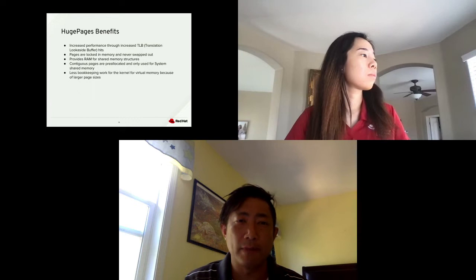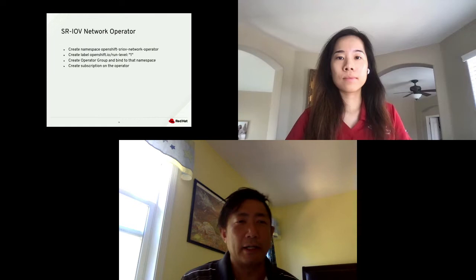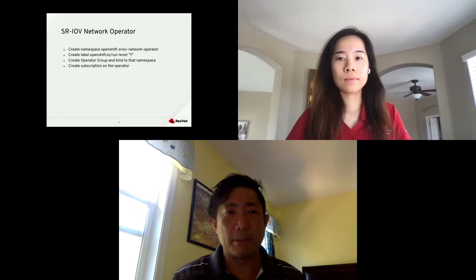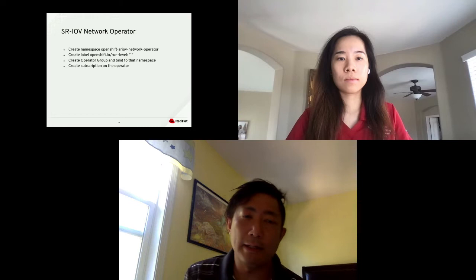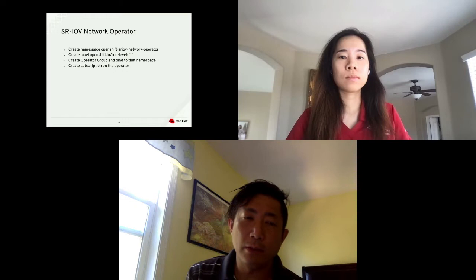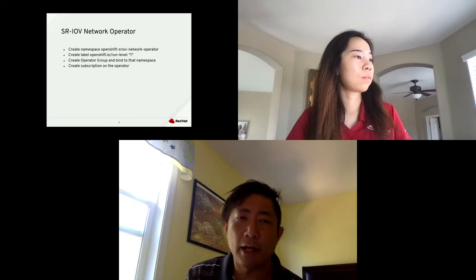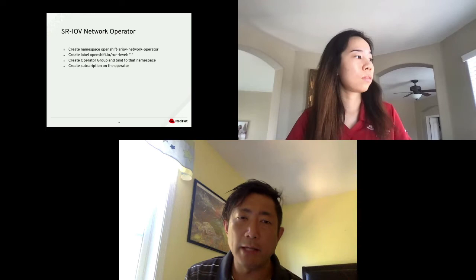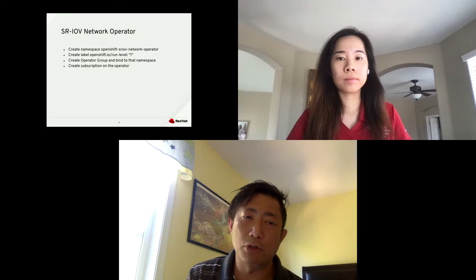Now for the SRIOV network operator, the second prerequisite we need to configure. First, we need to create a namespace in OpenShift for the network operator. The namespace will be called the OpenShift SRIOV network operator namespace. We need to create a corresponding label called OpenShift.io and set the level to one. The operator group needs to be created and bound to that specific namespace. Then we need to create a subscription for the operator.